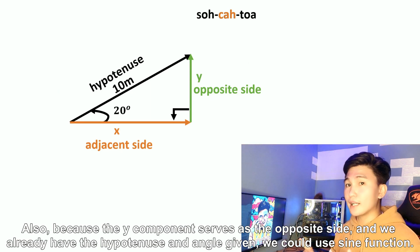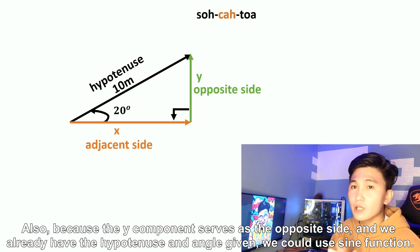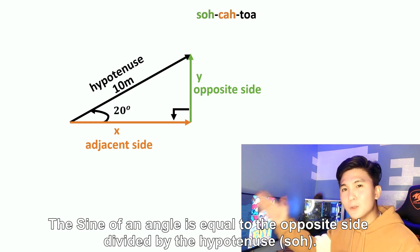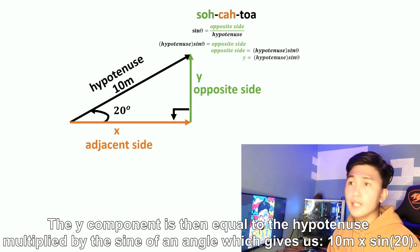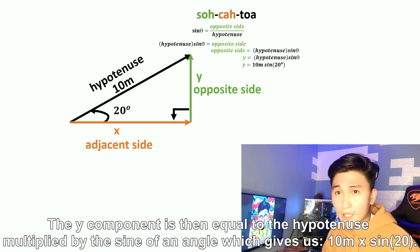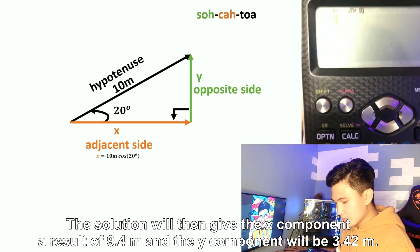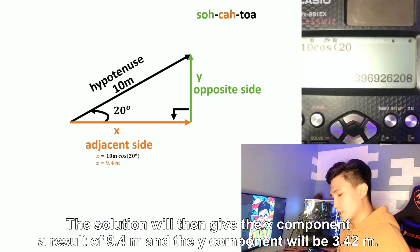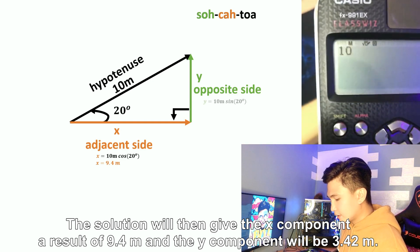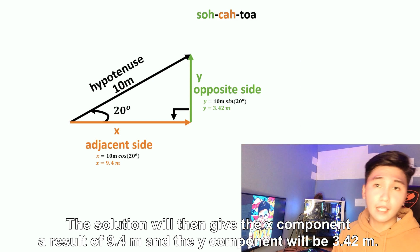Similarly, for the y component, since it is the opposite side and the hypotenuse is given, we use sine: sine θ = opposite over hypotenuse. So the y component = hypotenuse × sin(θ) = 10 meters × sin(20°). Solving these: for the x component, 10 × cos(20°) = 9.39 or 9.4 meters. For the y component, 10 × sin(20°) = 3.42 meters.